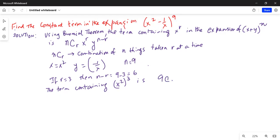9C3, r is 3, x is square to the power of r, then -1/x, which is my y, to the power of n - 3, so it is 9 - 3. And that is equal to 9C3 · (x²)³ · (-1/x)⁶.